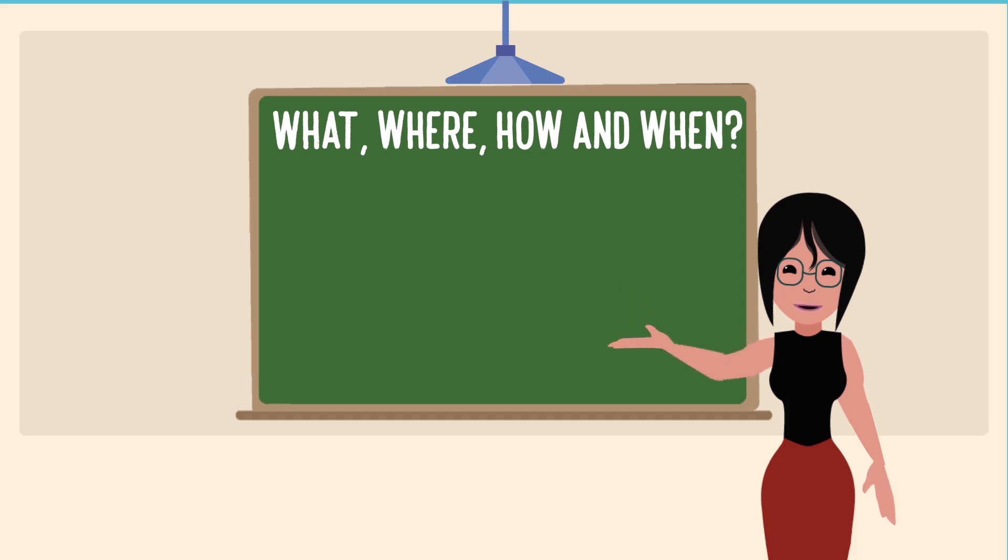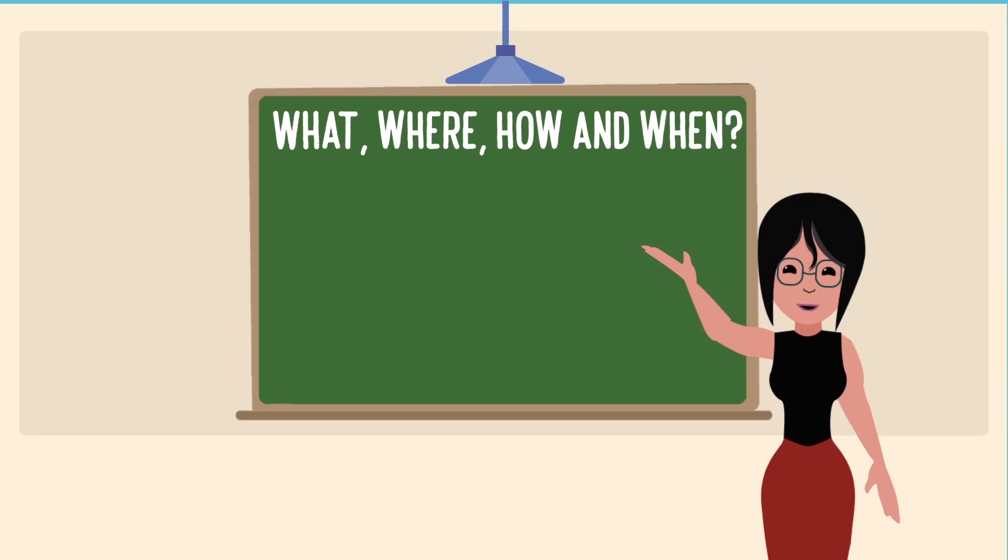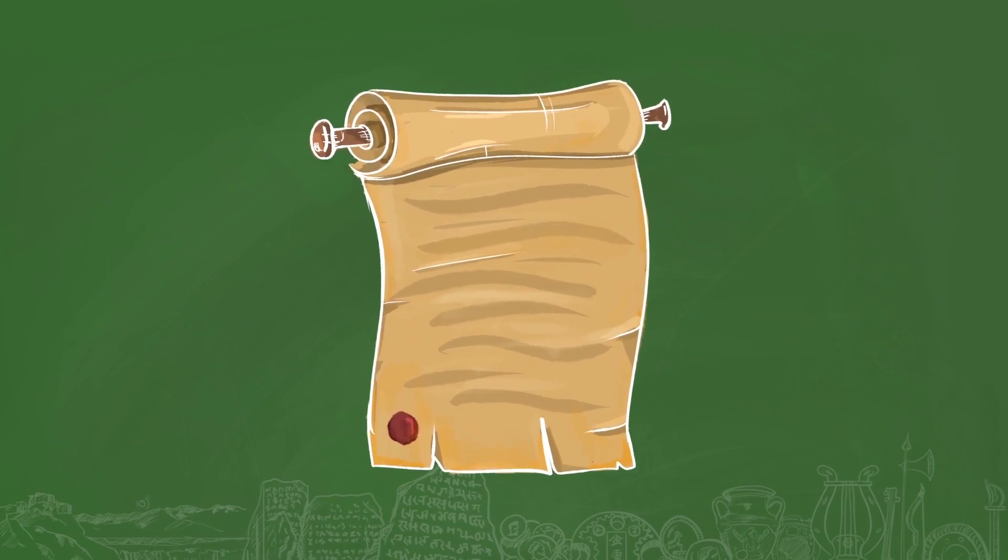Besides manuscripts, we also read about inscriptions. These are writings on relatively hard surfaces like stone or metal. Sometimes kings got their orders inscribed so that people could see and read them. Besides, there are other types of inscriptions where people inscribed their accomplished work. For example, kings recorded their victories in battle.